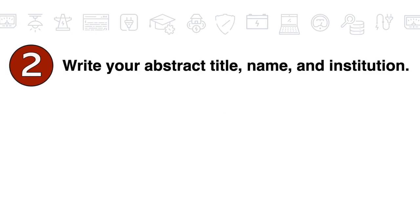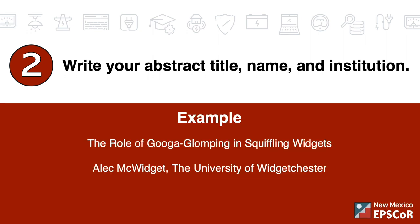Step two: write your abstract title, name, and institution. Add co-authors as appropriate. For example: 'The Role of Guga Glomping in Squiffling Widgets' by Alec McWidgett, the University of McWidgetter.